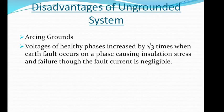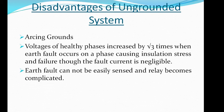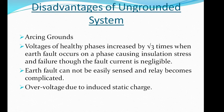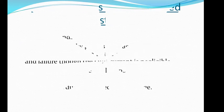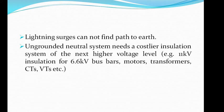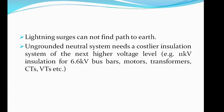Additionally, the voltages of healthy phases increase by root three times their normal values when an earth fault occurs on a phase, causing insulation stress and failure. Though the fault current is negligible, earth faults cannot be easily sensed, making design complicated. Overvoltages due to induced static charge are also a disadvantage of an ungrounded system, as lightning surges cannot find a path to earth to get discharged. Finally, an ungrounded neutral system needs a costlier insulation system of the next higher voltage level — for example, a 6.6 kV system must adopt 11 kV insulation design, demanding increased cost.